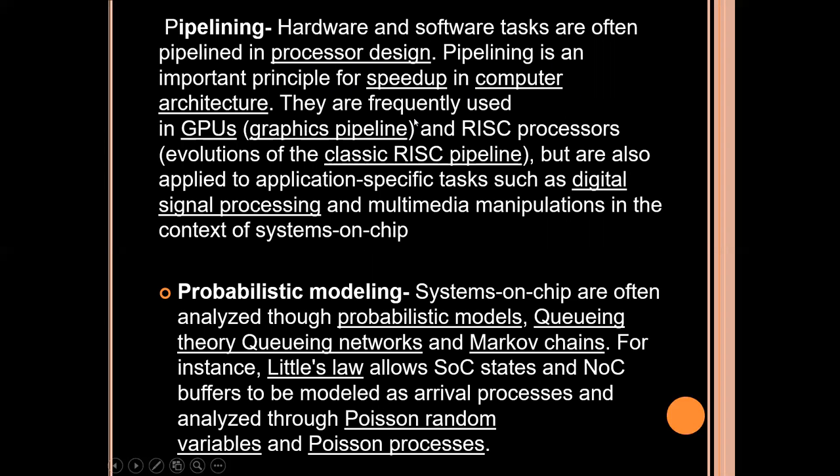Now, pipelining. Hardware and software tasks are often pipelined in a processor design. Pipelining is an important principle for speeding up computer architecture. Pipelines are frequently used in GPUs and RISC processors, evolving from the classic RISC pipeline, but are also applied to application-specific tasks such as digital signal processing and multimedia manipulation in the context of system on chip.